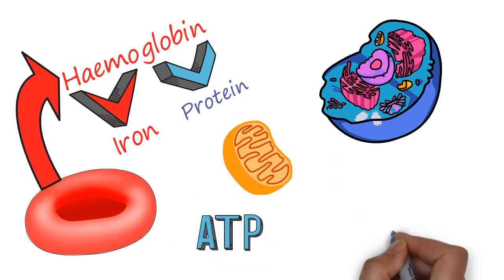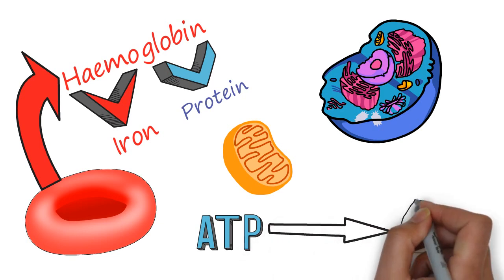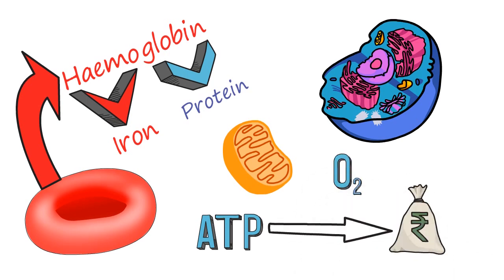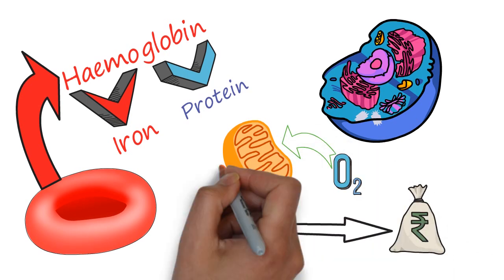ATP may be regarded as the currency of energy for a cell. Mitochondria uses a large amount of oxygen to produce ATP.